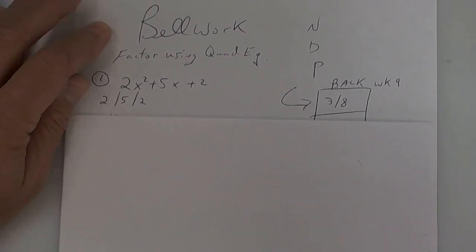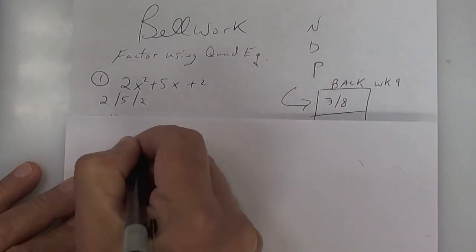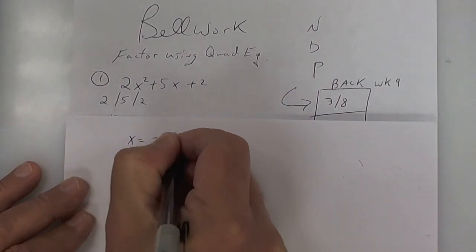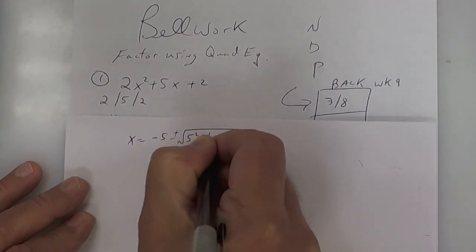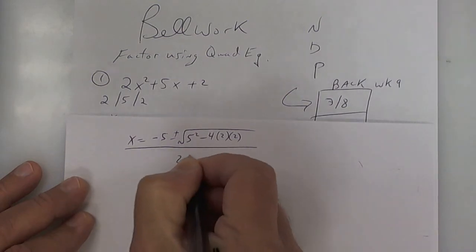Look up here. We've got A, B, and C. So we're going to go ahead and factor. To factor it, we're going to use the quadratic equation. So x equals negative B plus or minus the square root of B squared minus 4 times A times C, all divided by 2 times A.